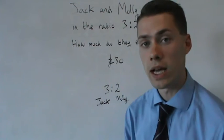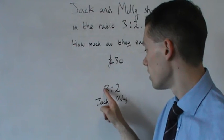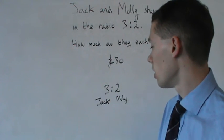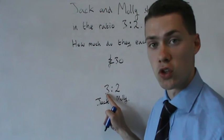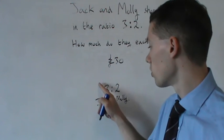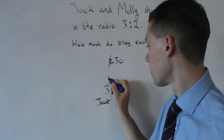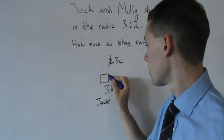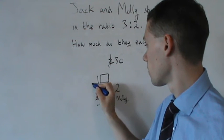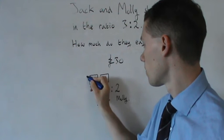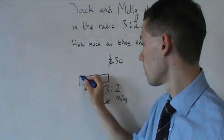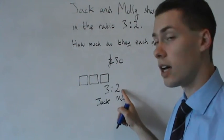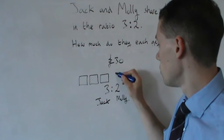Now we always, for ratio questions, draw boxes to represent the ratio. So on this side, I've got a 3, so I'll draw 3 boxes on this side. And then on this side, I've got a 2, so I'll draw 2 boxes on this side.